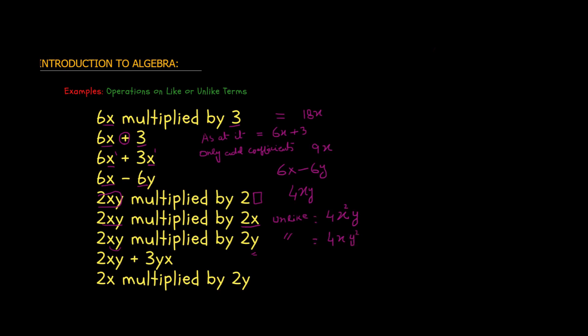Now 2xy plus 3yx. Are these like terms? Yes — because the order of the letters does not matter. We will see this when we study number properties. Because it is an addition operation: 2 plus 3 is 5, so 5xy is the correct answer. 5yx is also a correct answer because the order of these two letters does not matter.